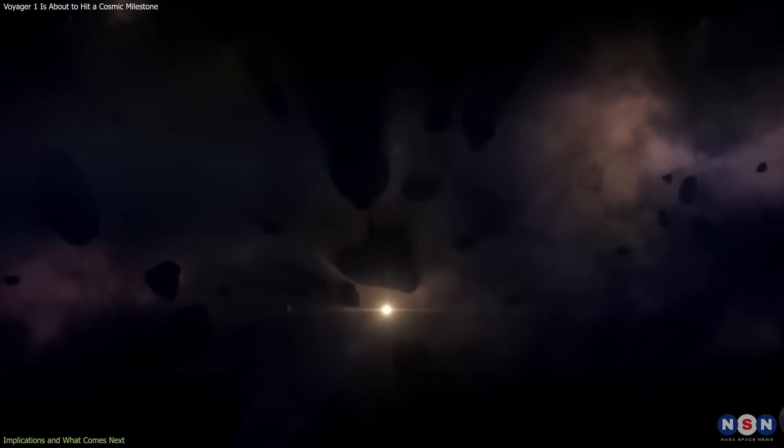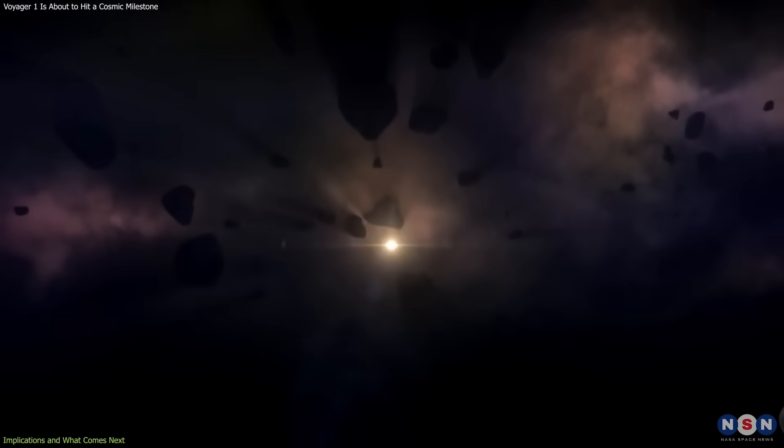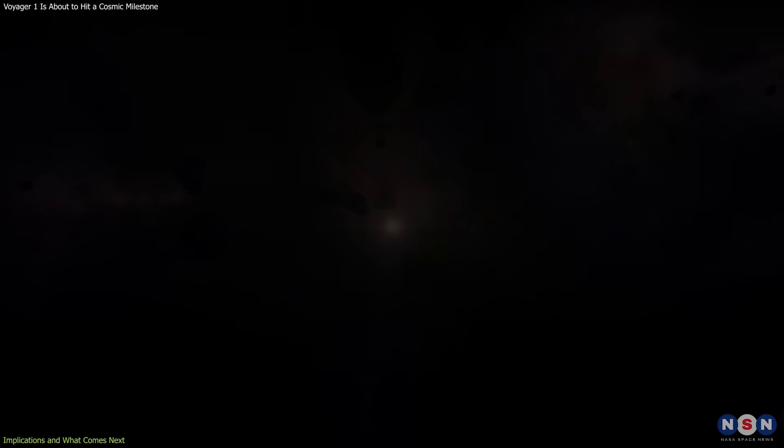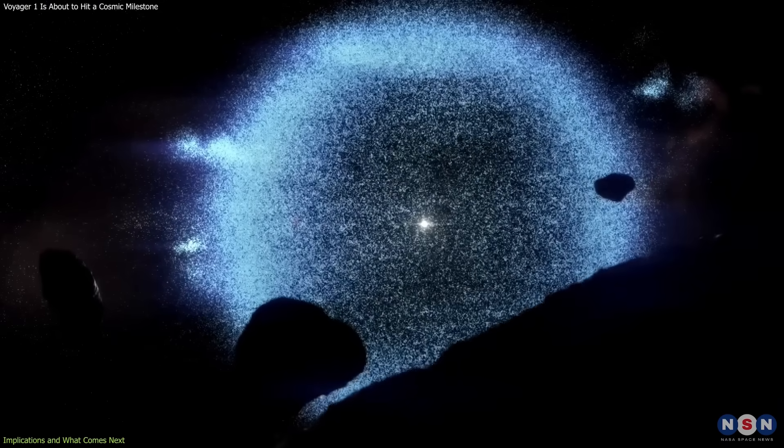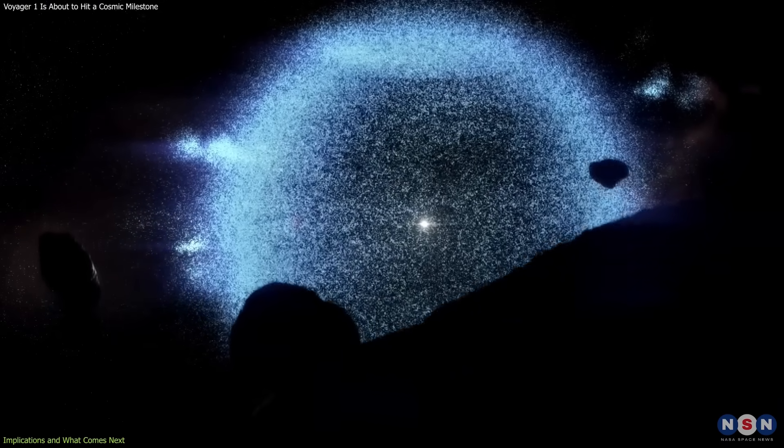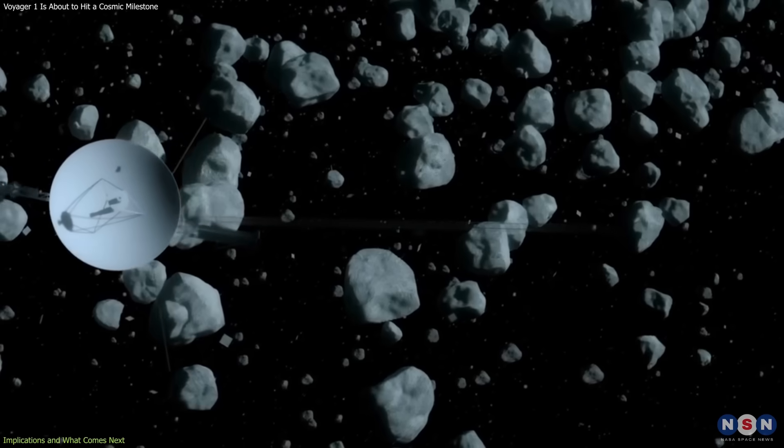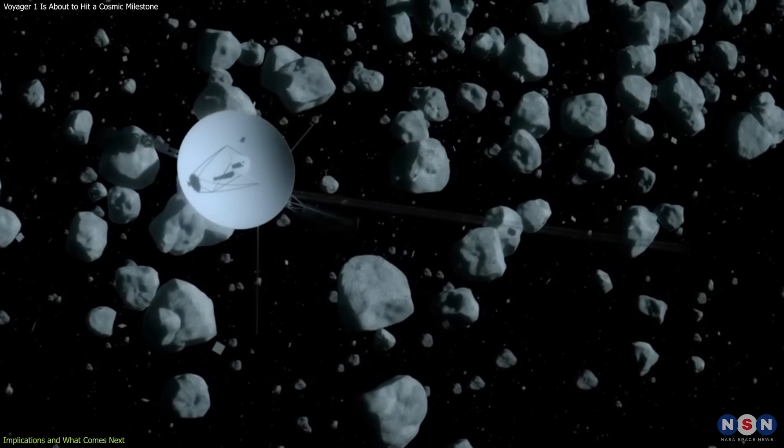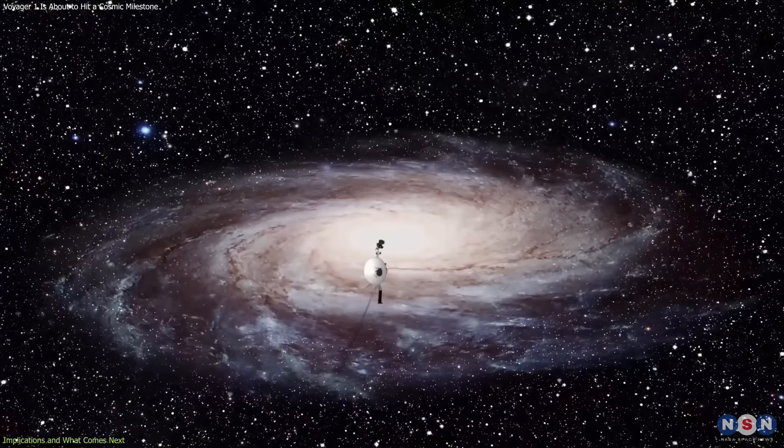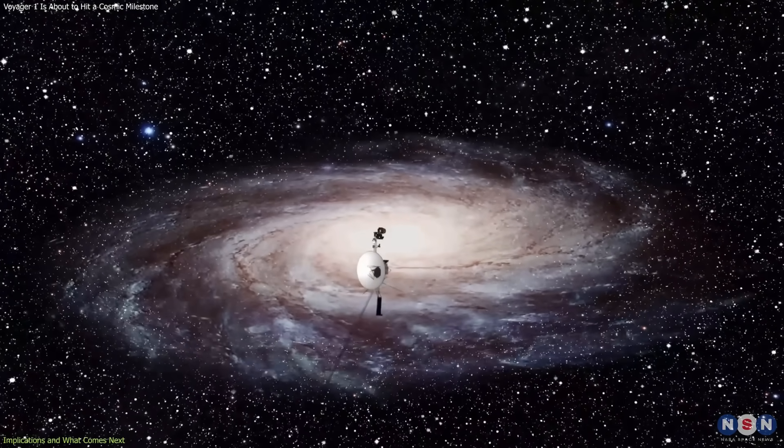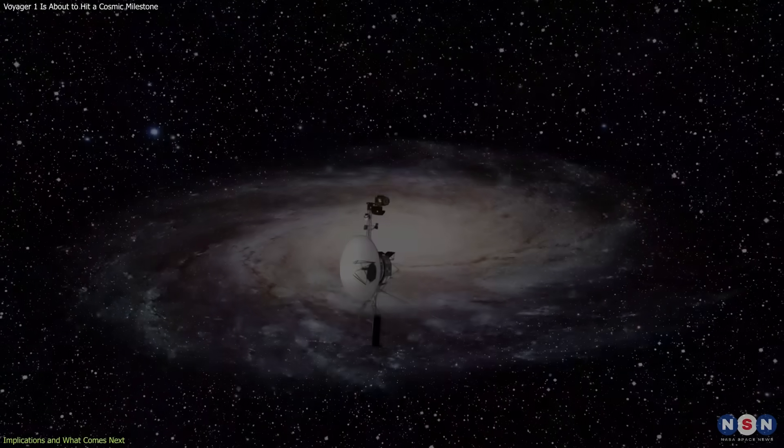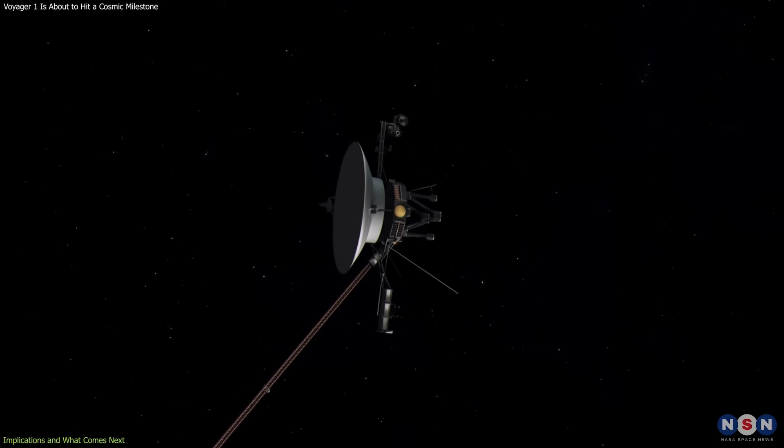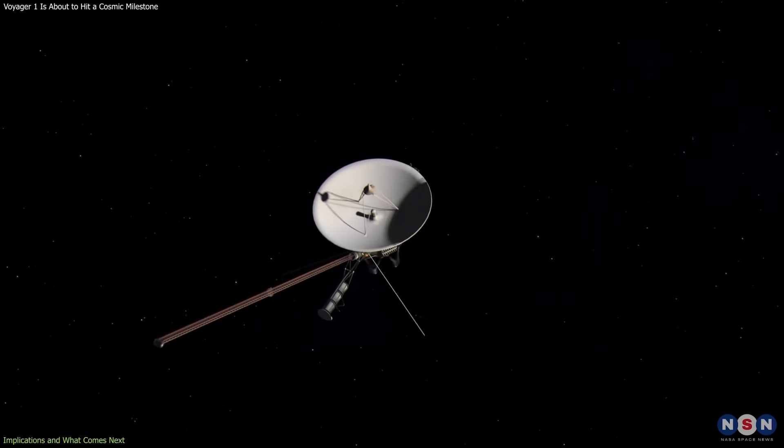In about 300 years, Voyager 1 will reach the inner edge of the Oort Cloud, the vast region of icy bodies that forms the solar system's outermost boundary. Passing through could take another 30,000 years. Beyond that lies open interstellar space, where the spacecraft will travel indefinitely, its trajectory unchanging unless influenced by a distant star.